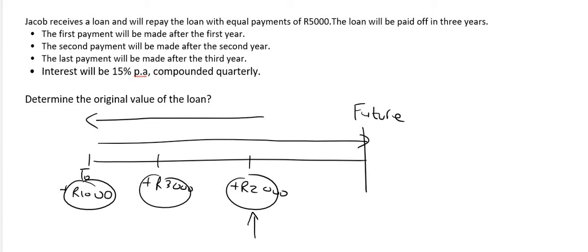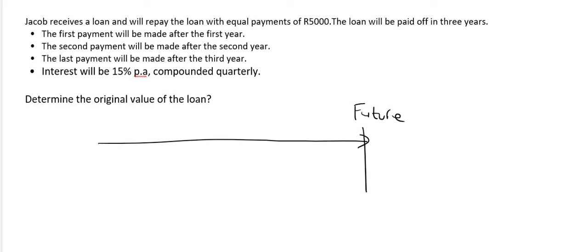So you want to take each of these amounts that we're going to use in the question, and you're going to drag each of them backwards. So instead of going forwards, you're going to go backwards. I'll show you how that works now. Because they're asking us for the original value of the loan.